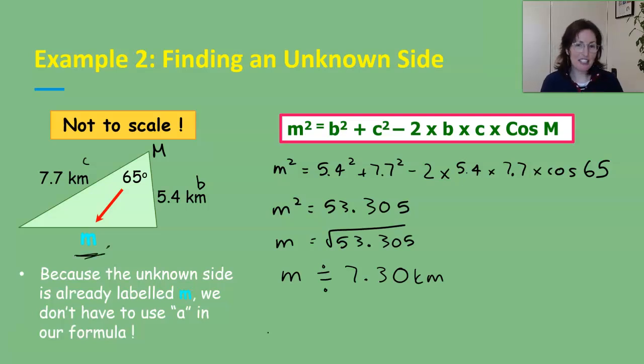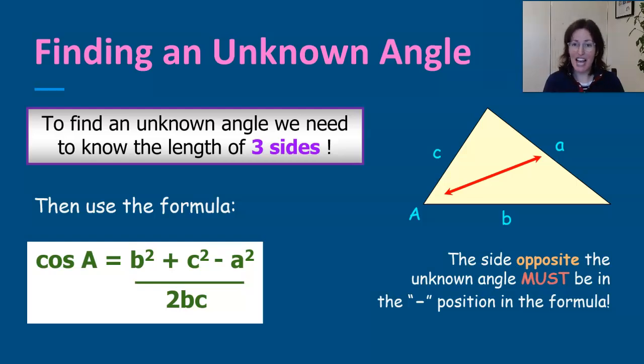The other scenario is when we are given three sides and we need to find the angle. The formula for that is actually just a rearrangement of the formula that we've been doing but we've done it for you to save you having to work out how to do that. The thing to note is that the side opposite the unknown angle must be in the subtract position in the formula.